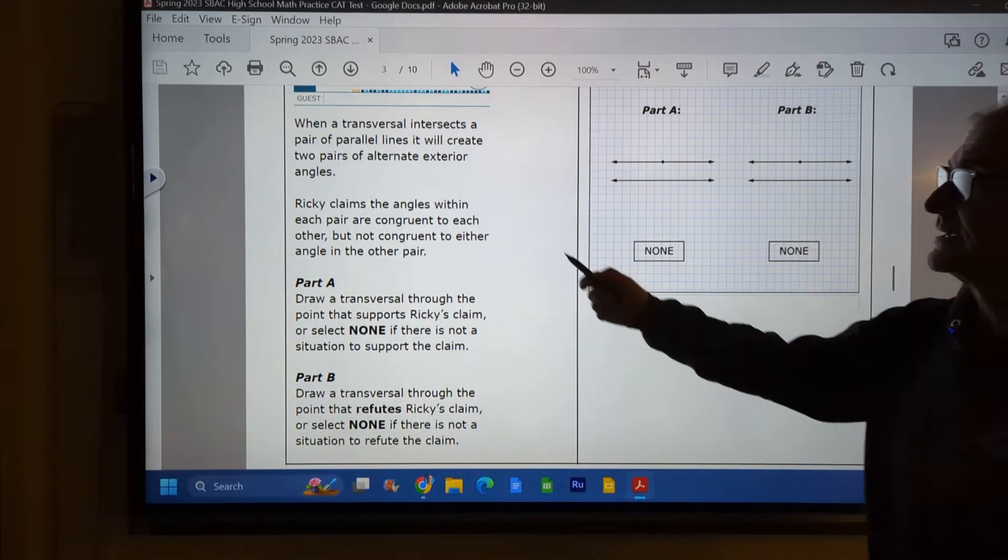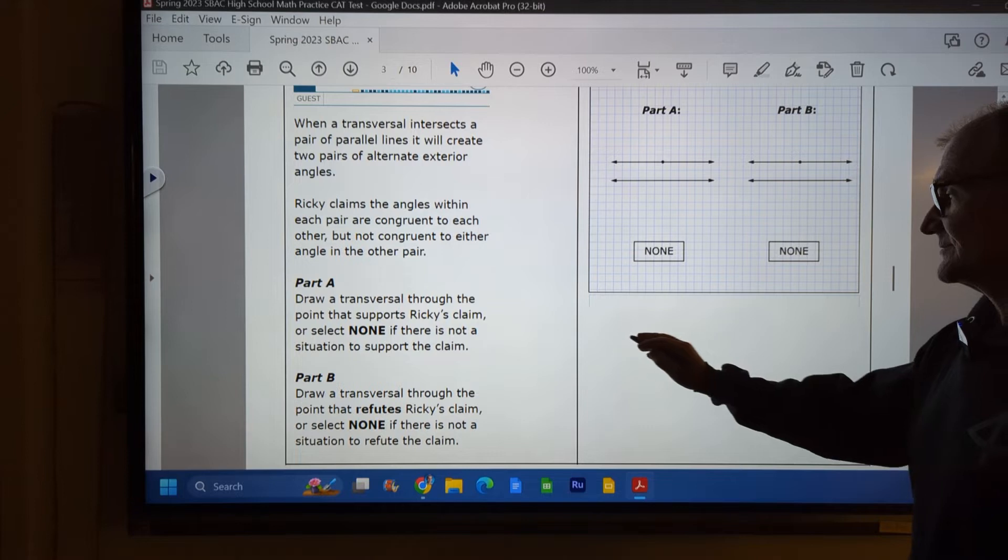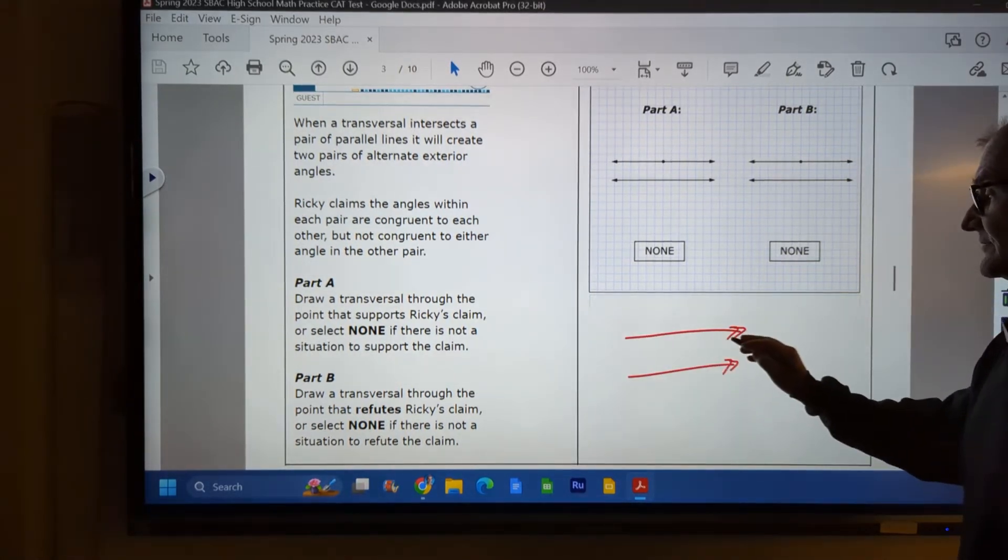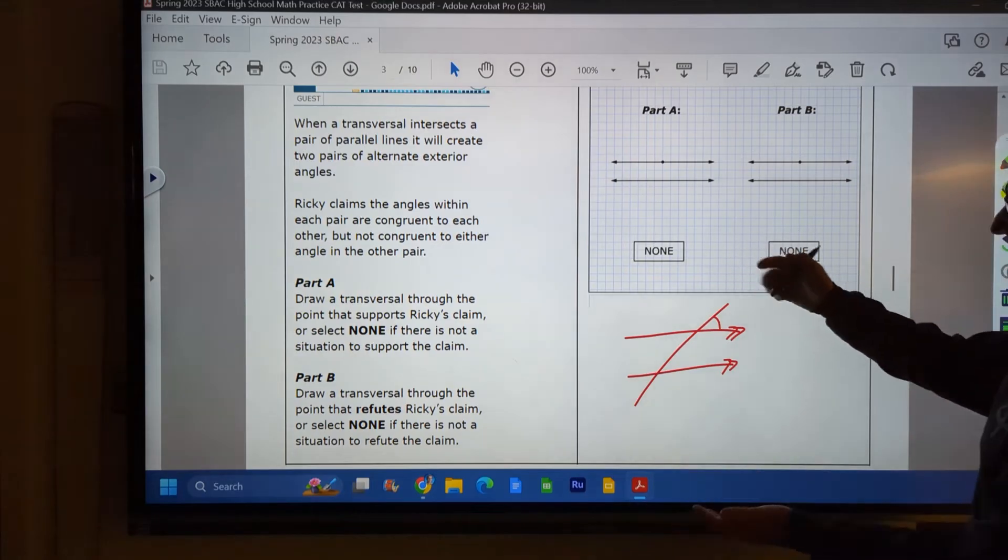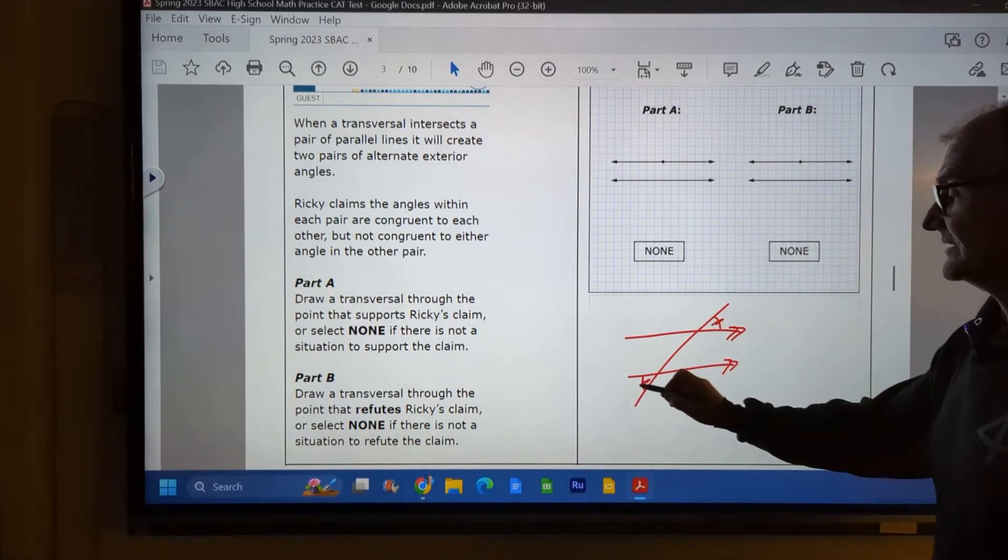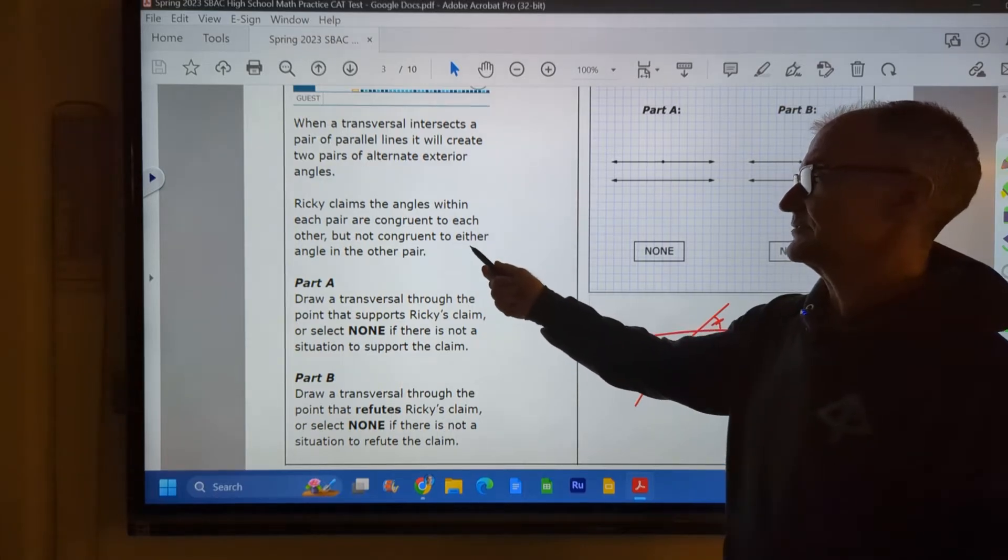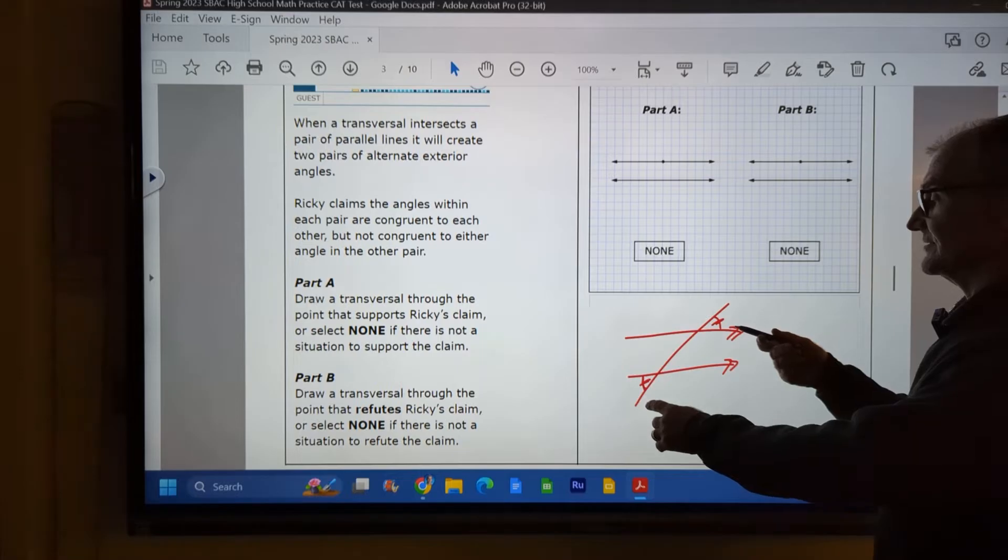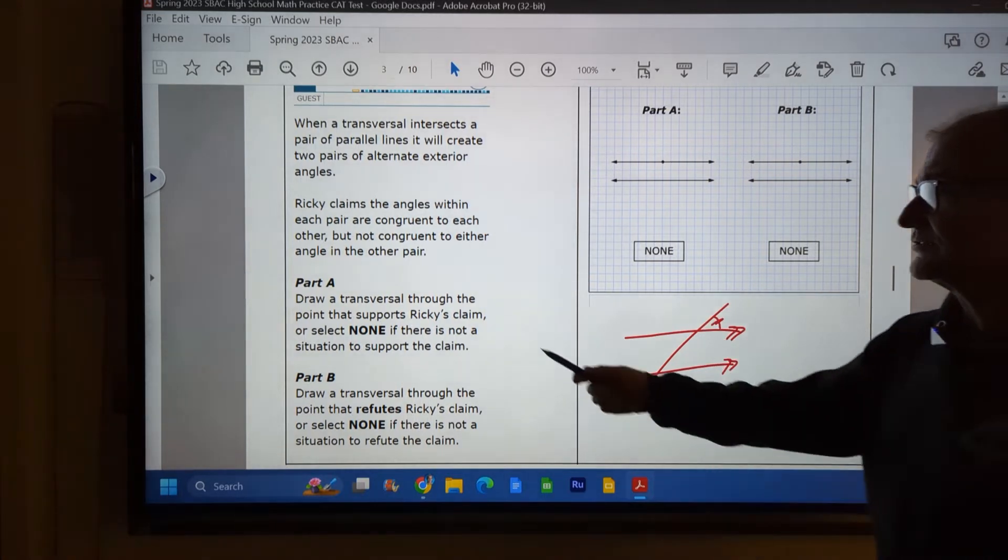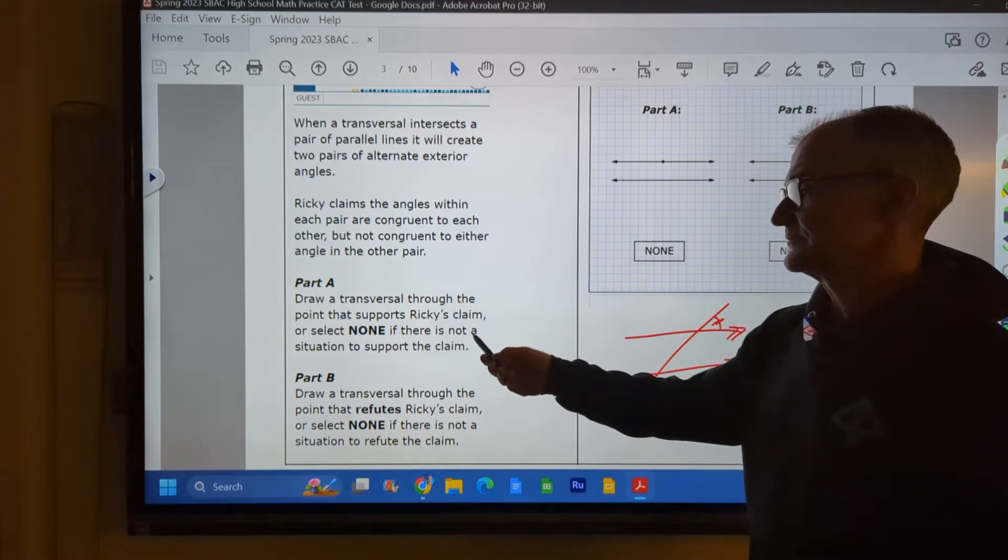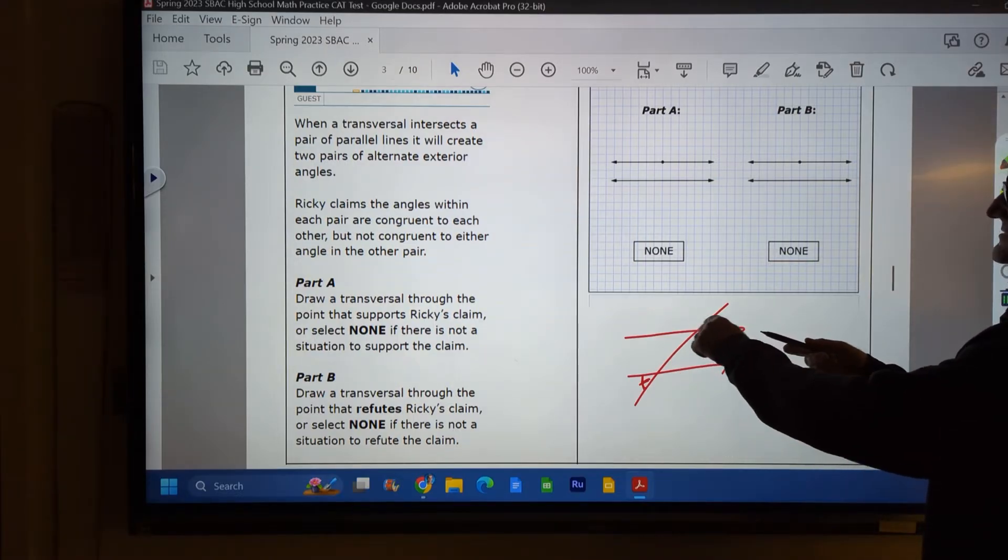All right, here's a bit of a reasoning problem here. When a transversal intersects a pair of parallel lines, it creates two pairs of alternate exterior angles. So what I'm saying is I've got parallel lines, usually denoted with like double arrows, transversal cutting it. Alternate means opposite, exteriors on the outside of the parallel line. So I've got these alternate exterior angles here, and I know they're congruent. Ricky claims the angles within each pair are congruent to each other, but not congruent to either angle in the other pair. So we're saying these are congruent to each other, but not congruent to this pair right here. It's really like a word problem. More English decoding than math.